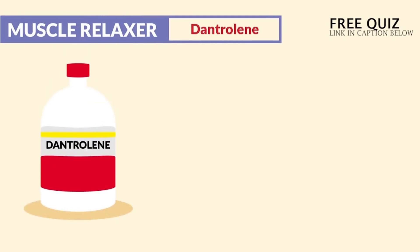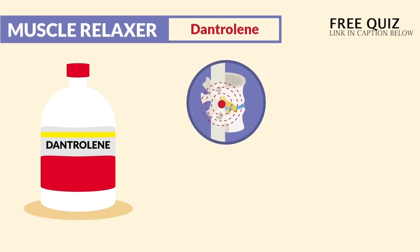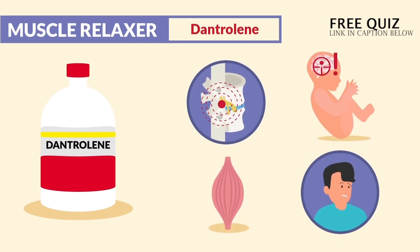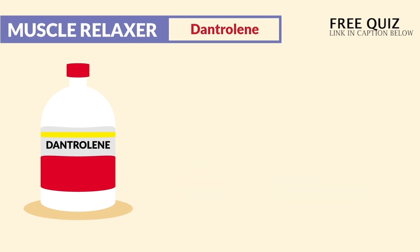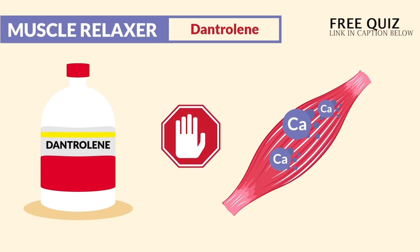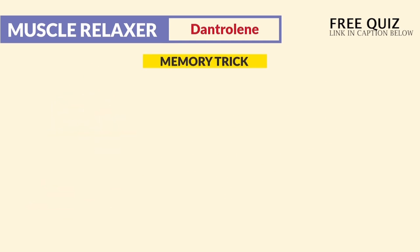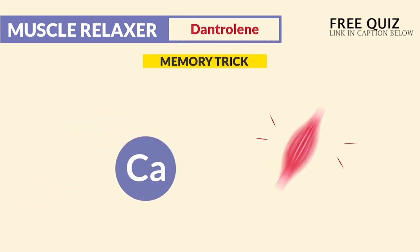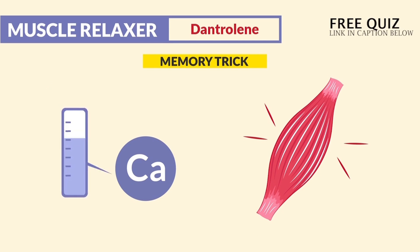The first muscle relaxer is dantrolene, given mainly for muscle spasticity, like spinal cord injuries, cerebral palsy, MS, and even stroke clients. The mechanism of action is that it acts directly on the muscles to prevent the release of calcium, which in result reduces or weakens the force of contraction. The memory trick we use is: calcium contracts the muscles, so with less calcium, we get less contraction.